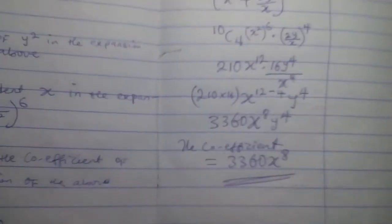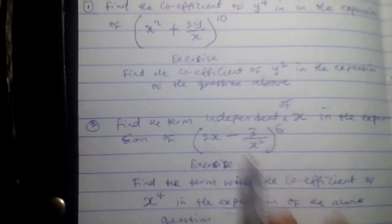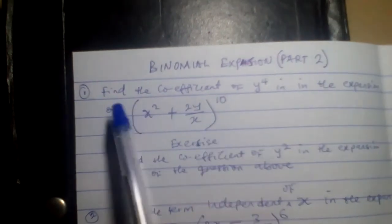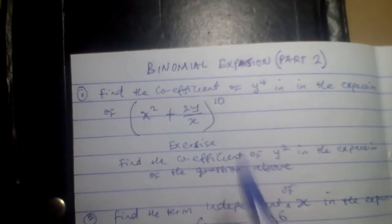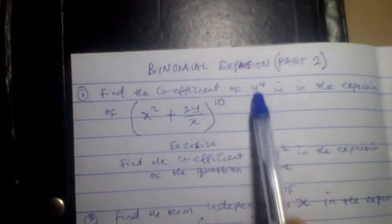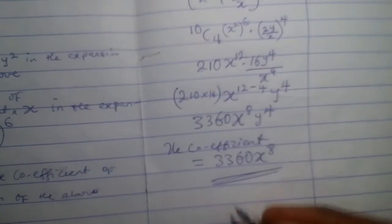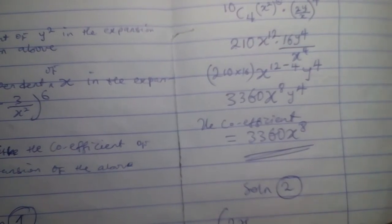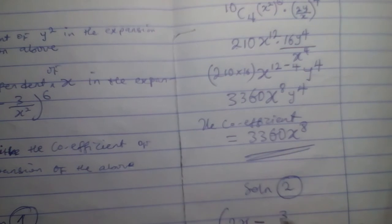Now let's solve the second question. The second question says: find the term independent of x in the expansion of 2x minus 3 over x squared, everything raised to the power 6. It is still the same approach as before. The only difference is that we are finding the term that is independent of x here, while before we were finding the coefficient of y raised to power 4.